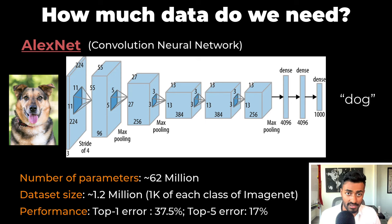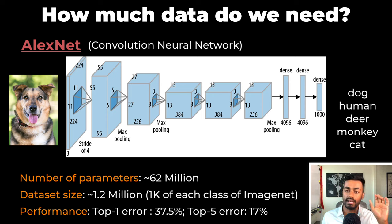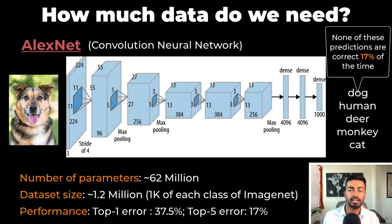As far as performance is concerned, its top one error rate is 37.5% and top five error rate is 17%. This means that if we take the top one prediction from the AlexNet predictions, 37.5% of the time, the true label is not in the top one. But if we take the top five predictions from AlexNet, then 17% of the time, the true label is not in the top five.